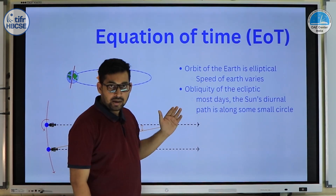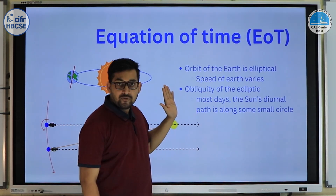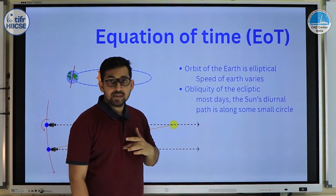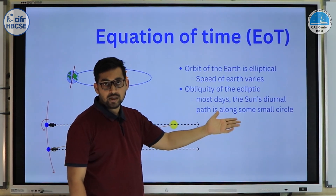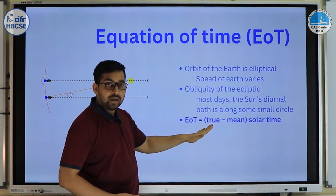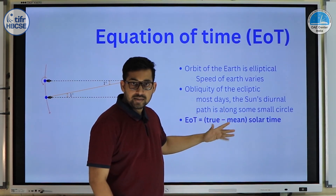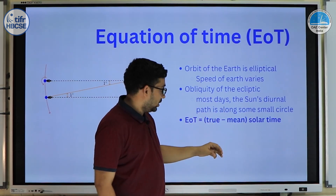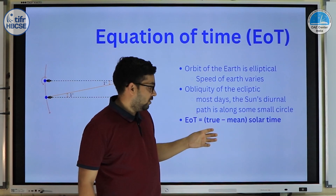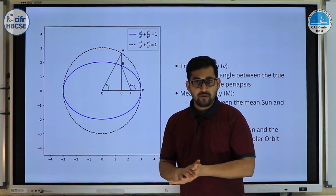The obliquity of the ecliptic causes an additional issue. Even if eccentricity were zero, since the Sun moves along the ecliptic at an angle compared to the celestial equator, the right ascension of the Sun will no longer change uniformly. Compared to the Mean Sun, the True Sun will at some points be ahead and at others behind. The equation of time is defined as the position of the True Sun minus the Mean Sun, measured in minutes.